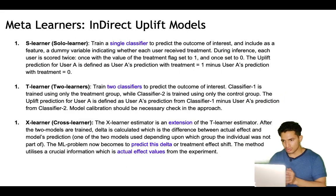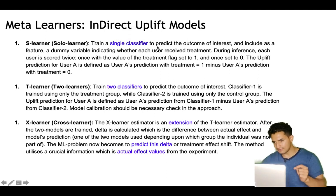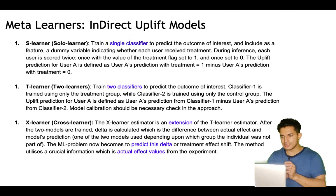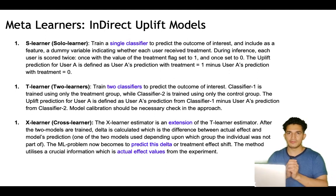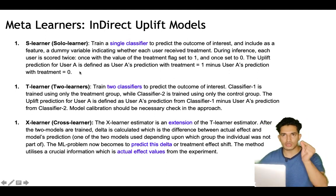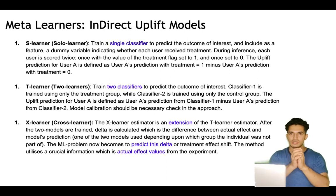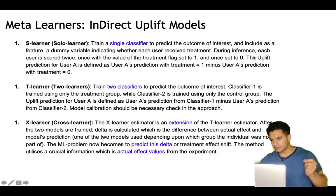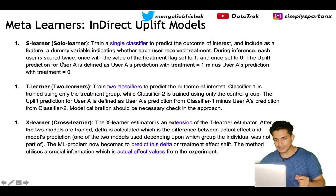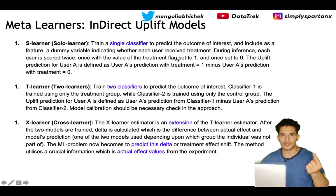A few popular meta learners are the S-learner, T-learner, and X-learner. The S-learner is the 'solo learner' — we train a single classifier to predict the outcome of interest and include as a feature a dummy variable indicating whether each user received treatment. Basically, we have a randomized control trial where some users are part of the treatment group and another part are the control group, so we have a dummy variable indicating whether the user was part of treatment or control.